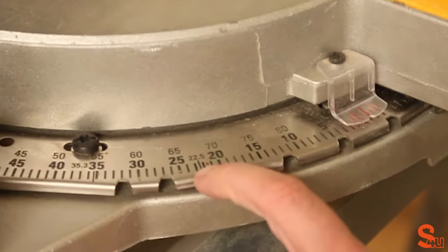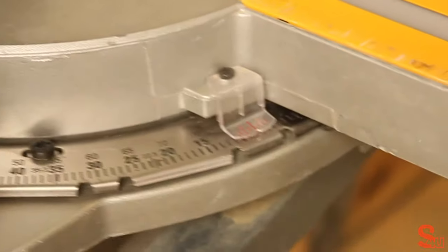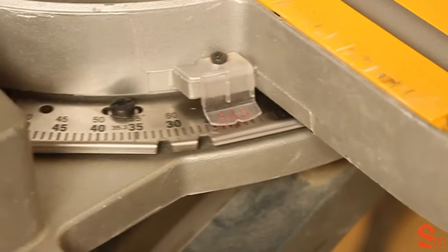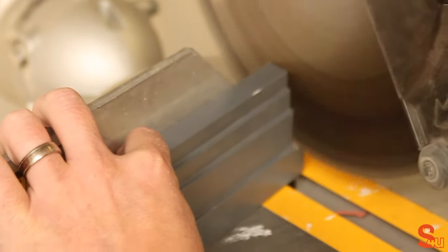So basically this is for our cut. We need to set our mitre saw to 22.5 degrees and then make the cut on the board.